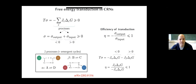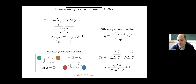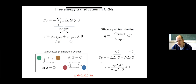We can now define the key decomposition of dissipation in terms of currents along emergent cycles multiplied by the force along each emergent cycle. This decomposition allows us to discriminate the processes that contribute as output — negative contribution to dissipation — from those that are positive and play the role of the powering process. The efficiency is defined as minus the output divided by the input, bounded by one. In the simple linear network example with two emergent cycles, we identify the first emergent cycle as conversion of A into D and the second as B into C.